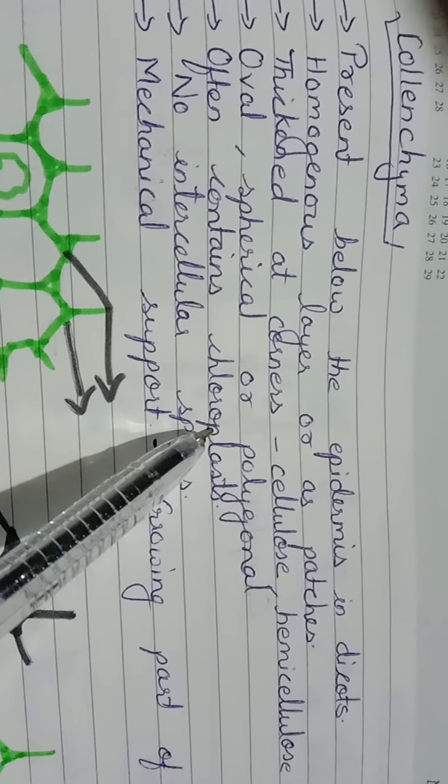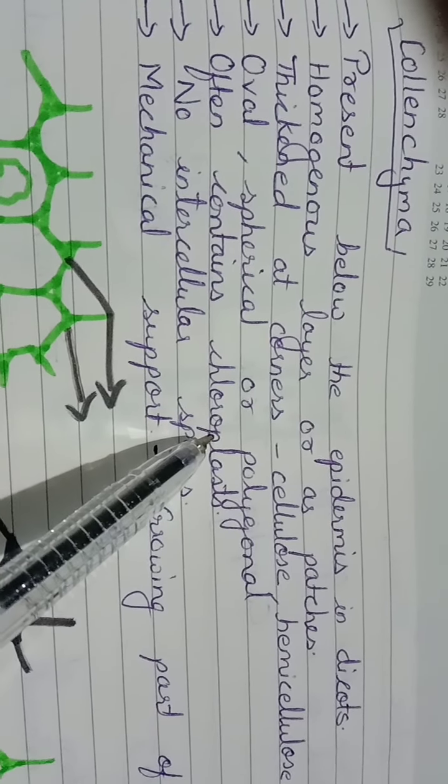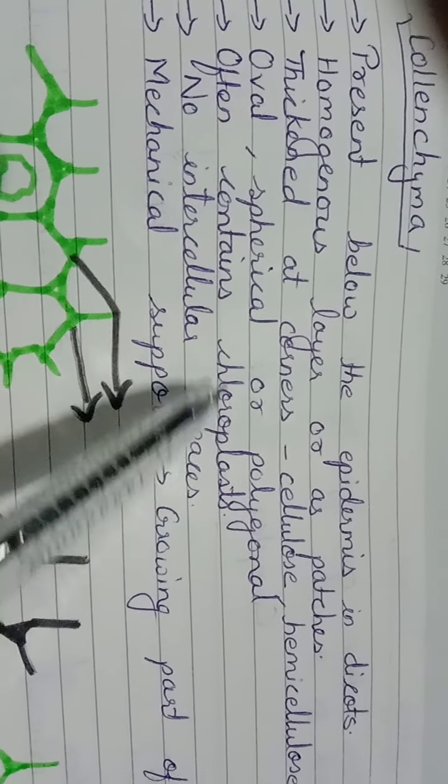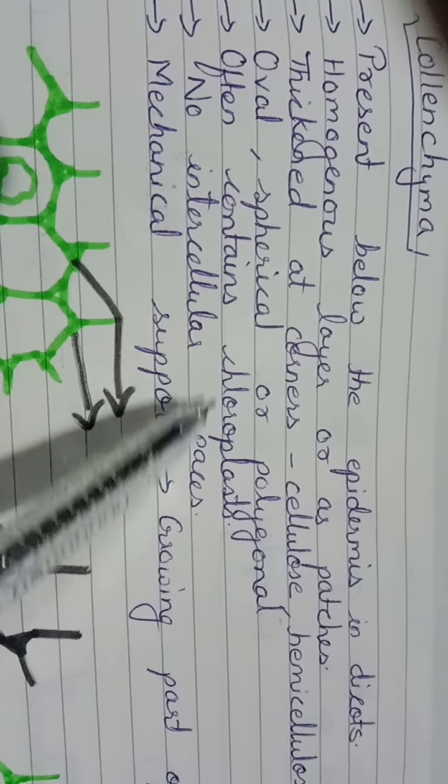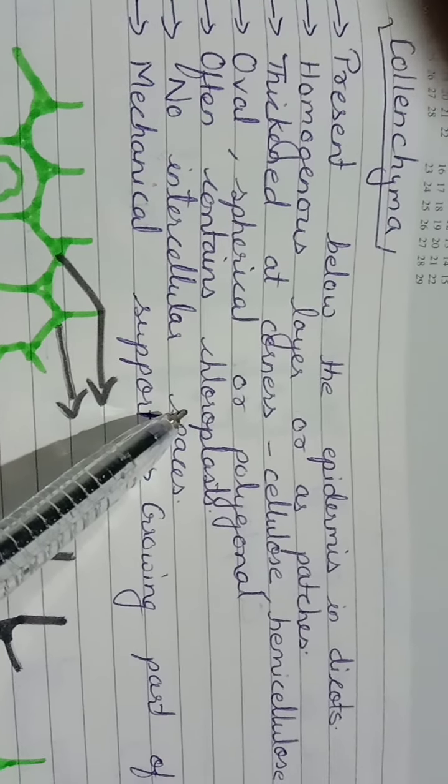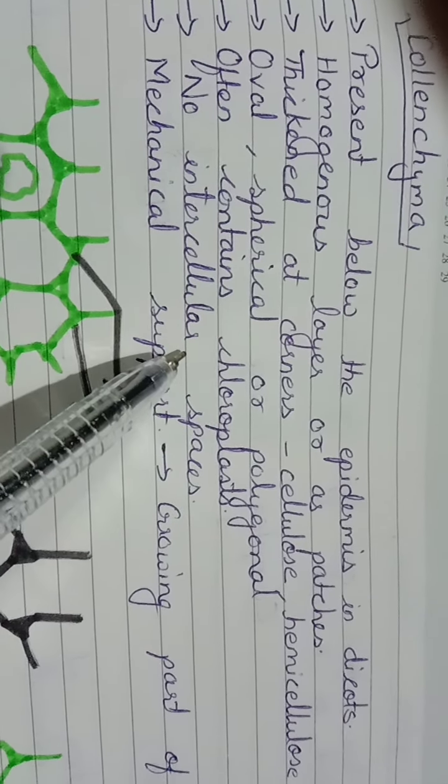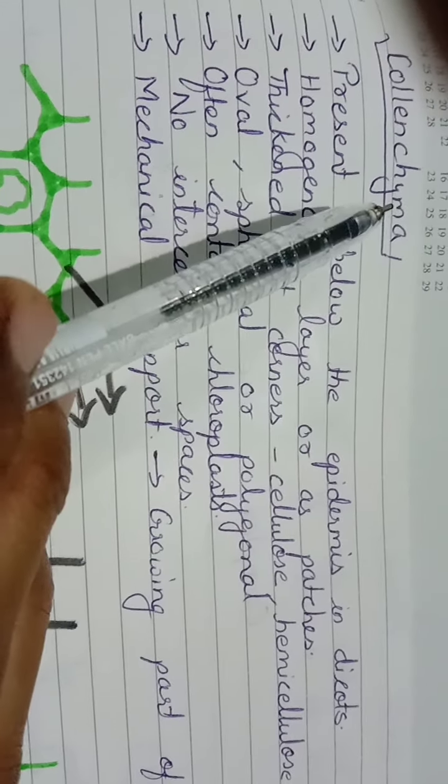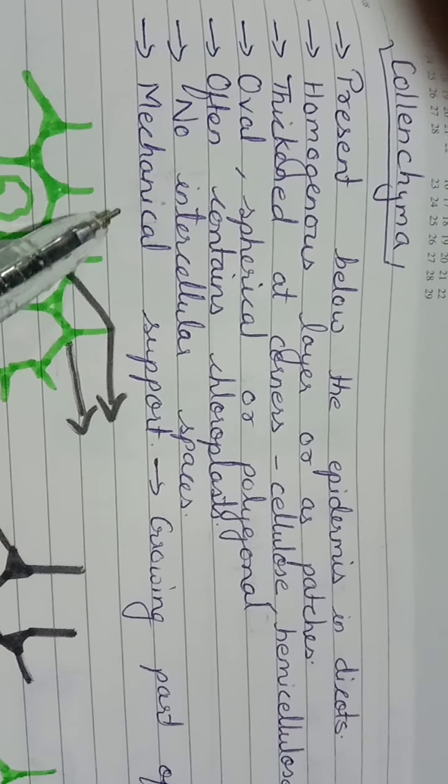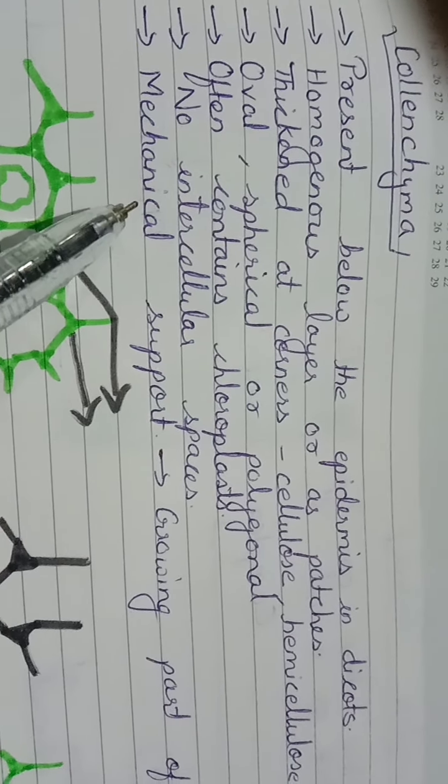In colenchyma there are no intercellular spaces. As we have seen, intercellular spaces are present in parenchyma. Colenchyma, because of the thickness at the corners, mainly acts or gives support to the growing part of the plant, thereby giving mechanical support.